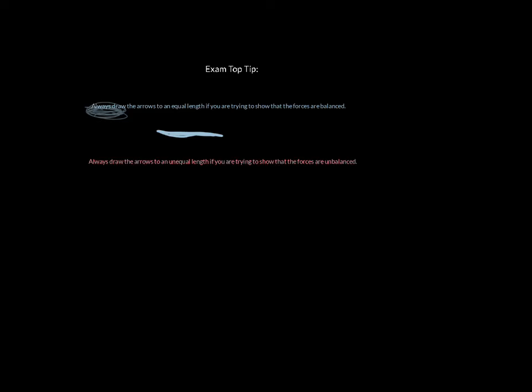Two key exam tips for free body diagrams: first, always draw arrows to equal length if you are trying to show that forces are balanced — if you don't, you lose the marks. Conversely, always draw arrows to unequal length if you are trying to show that forces are unbalanced. Look at the examples where friction might be longer than air resistance, or reaction force longer than weight.